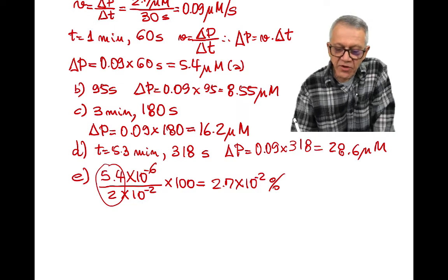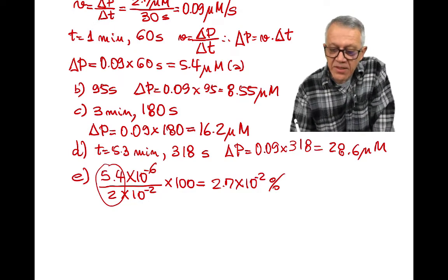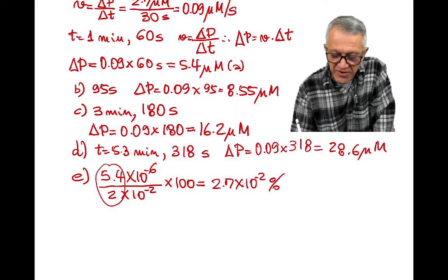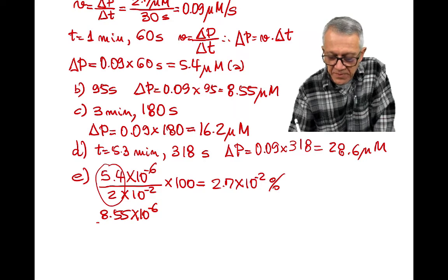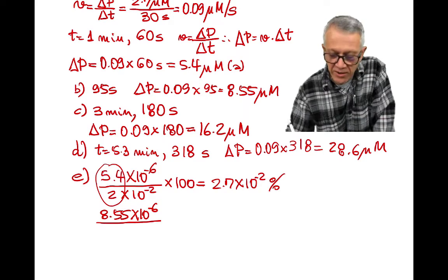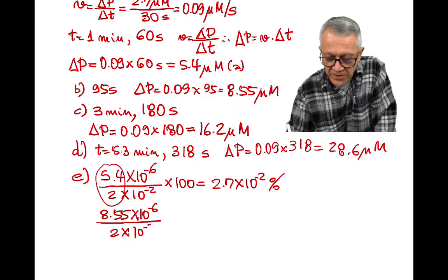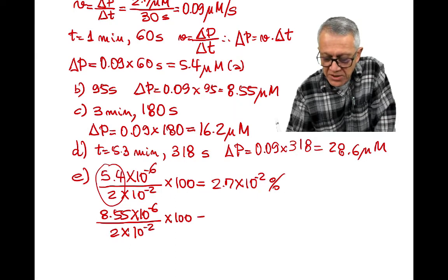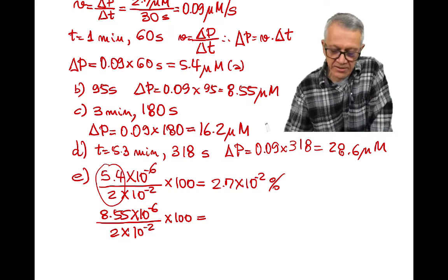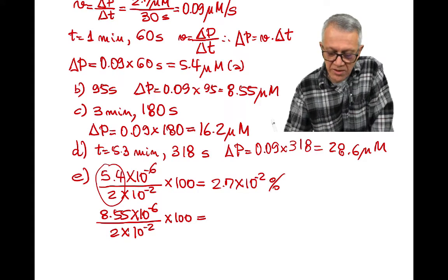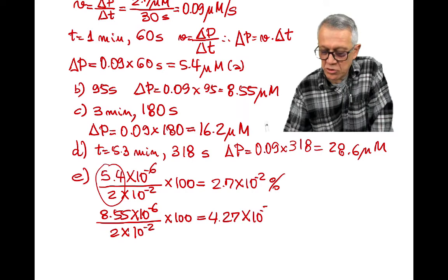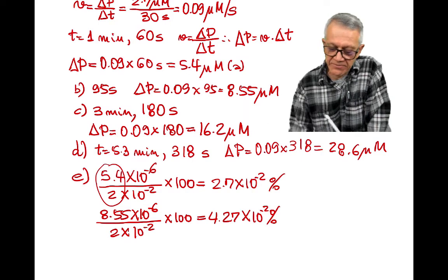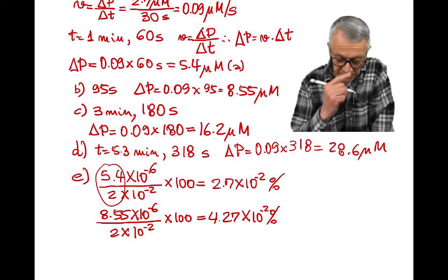The next one that comes from letter B, in letter B we had 8.55. 8.55 times 10 to minus 6, remember? 8.55 micromolar out of 2 times 10 to the power of negative 2 times 100 to make percent. That will be 4.27 times 10 to minus 2 percent.